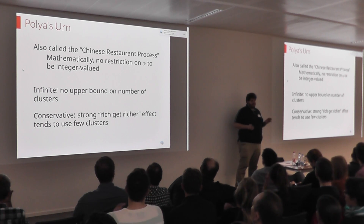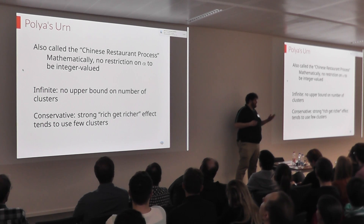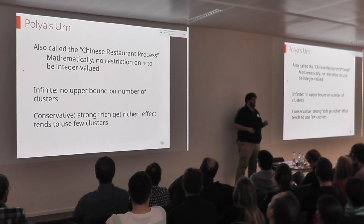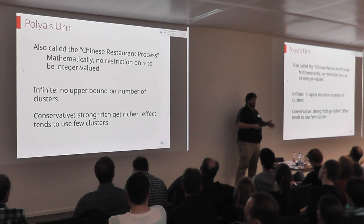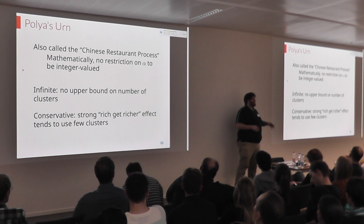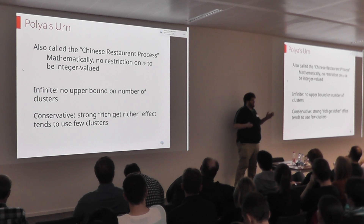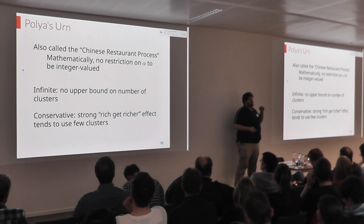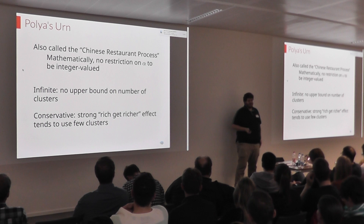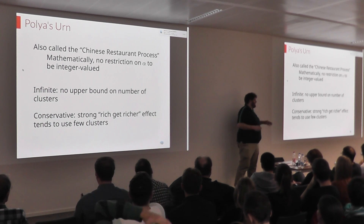What's really nice about this is that it's infinite in some sense — there is no upper bound on the number of clusters possible. As we add new data we can always choose a new cluster. But much more importantly, it's also conservative: it has a rich-get-richer effect where if you have an urn with a million red balls, you are a million times more likely to use red than to start a new cluster. So you're not going to use too many clusters to describe your data. This rich-get-richer effect puts a prior that keeps the number of clusters down — it says we don't know how many clusters there are exactly, but there's not too many.